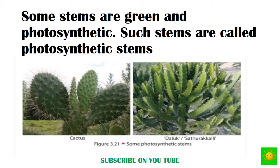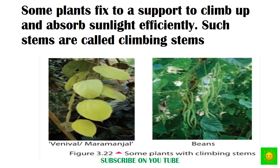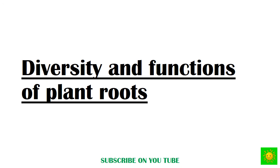Some stems are green and photosynthetic; these stems are called photosynthetic stems. Some plants fix to a support to climb up and absorb sunlight efficiently; such stems are called climbing stems. Examples of climbing stems include venival and beans.